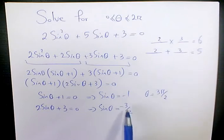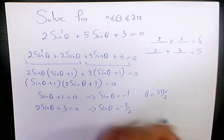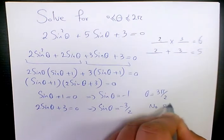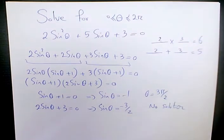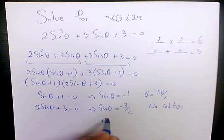The other one is sine theta equals negative 3 over 2, which is negative 1.5. We know the range for sine functions and cosine functions is negative 1 to positive 1. It means that the answer of sine theta and cosine theta cannot be more than positive 1 and cannot be less than negative 1. So because it's negative 1.5, it means there is no solution. So the only answer to this question is going to be 3 pi over 2, or 270 degrees.